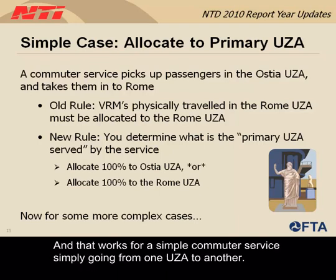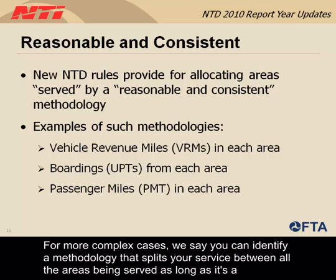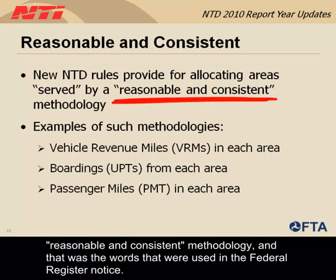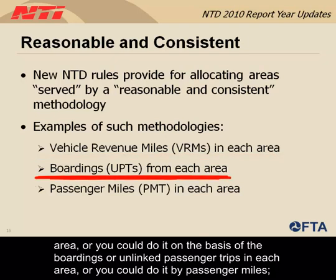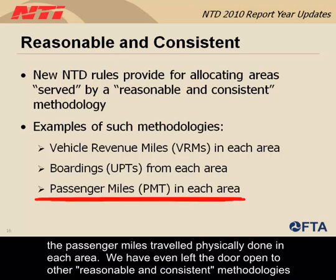For more complex cases, you can identify a methodology that splits your service between all areas being served, as long as it's a reasonable and consistent methodology — the language used in the Federal Register Notice. Examples include splitting service based on vehicle revenue miles in each area, boardings or unlinked passenger trips in each area, passenger miles traveled in each area, or other reasonable and consistent methodologies.